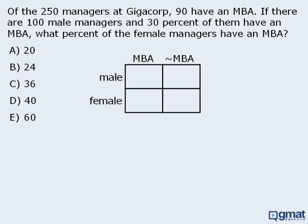Our goal is to place each of the 250 managers in one of the four boxes depending on their characteristics. First, we are told that 90 of the managers have an MBA, so the sum of those two boxes must be 90. Since there are 250 managers altogether and 90 have an MBA, the remaining 160 managers do not have an MBA, so the sum of those two boxes must be 160.